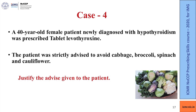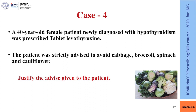A 40-year-old female patient newly diagnosed with hypothyroidism was prescribed tablet levothyroxine. The patient was advised to avoid cabbage, spinach, broccoli and cauliflower — these are goitrogenic foods which decrease uptake of iodine by the thyroid gland and hence should be avoided in patients with hypothyroidism. This is an example of a case where an adequate precaution has been taken while prescribing to prevent a possible adverse drug reaction.